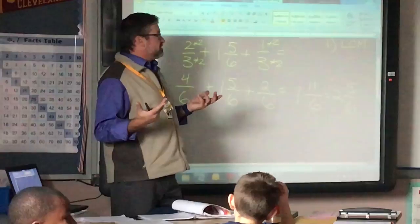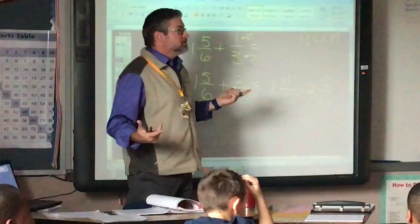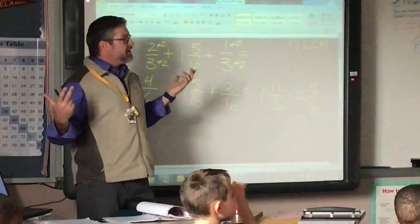So your factors of 5 are 1 and 5. Is 5 a factor of 6? No. So the only common factor is 1, which means it's simplified already.